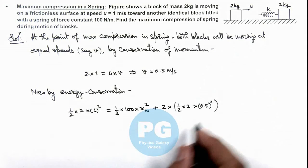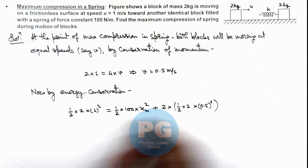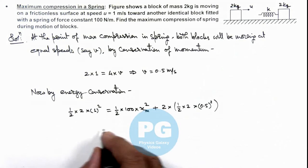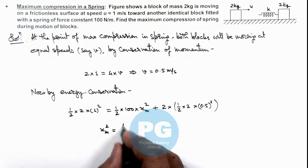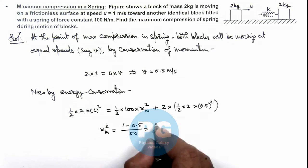On simplifying this relation, several terms can be directly simplified and the value of x_m² we are getting is (1 - 0.5)/50 which equals 1/100.